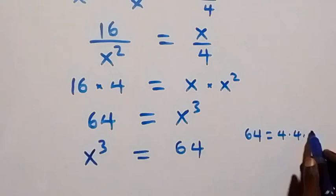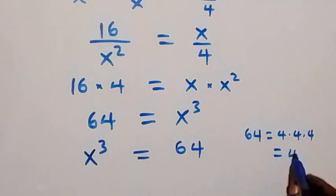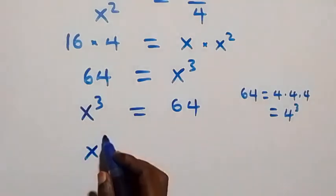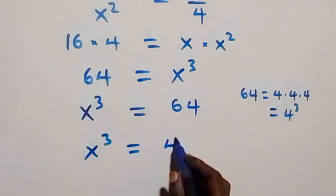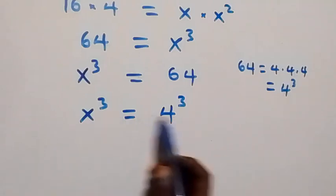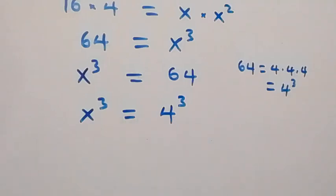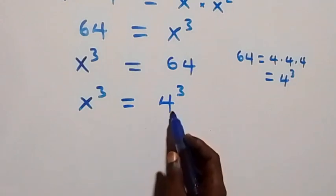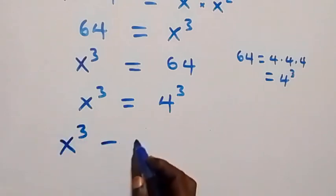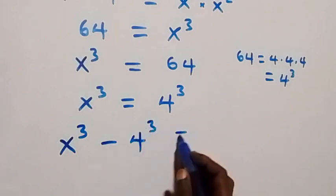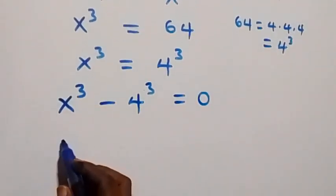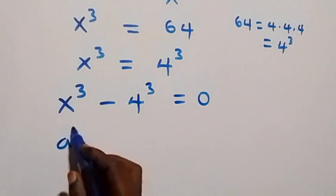This is the same as x cubed equals 64. And 64 can be written as 4 times 4 times 4, which is 4 raised to power 3. So we have x cubed equals 4 cubed. Now taking 4 cubed to the left hand side, we have x cubed minus 4 cubed equals 0.